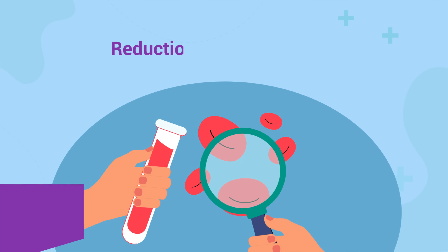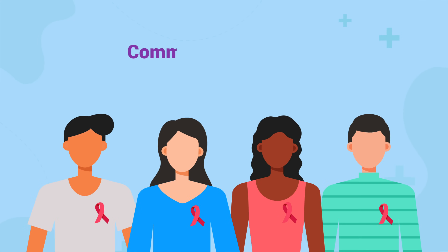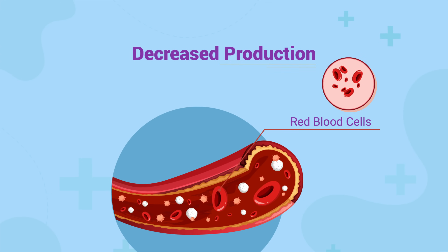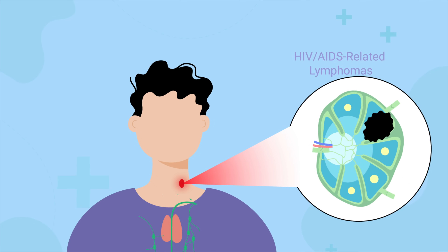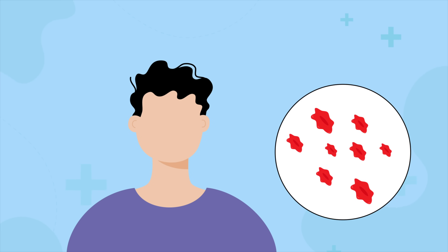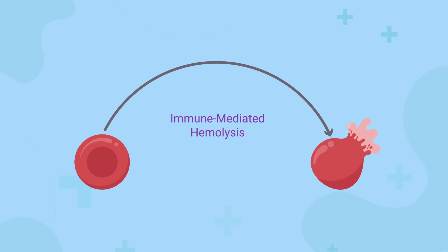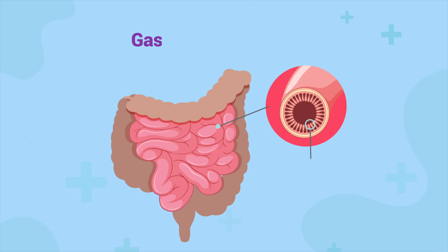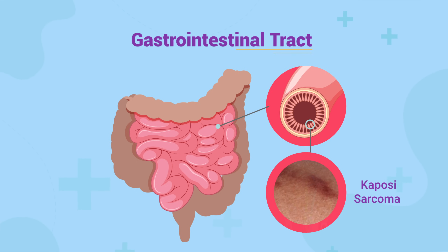Anemia, which can be defined as a reduction in hemoglobin concentration or hematocrit, is common in people living with HIV. This occurs because of decreased production of red blood cells — for example, due to marrow infiltration of opportunistic infections and HIV-AIDS-related lymphomas. HIV-infected patients also experience increased destruction of red blood cells, for example due to immune-mediated hemolysis. And finally, they lose blood from the gastrointestinal tract, especially when they have Kaposi sarcoma in the GI tract.